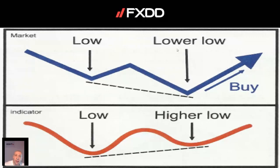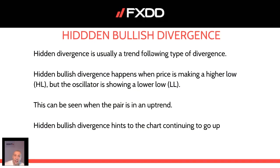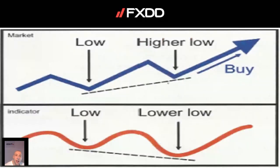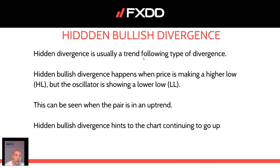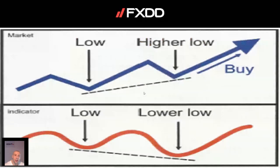Hidden bullish divergence is usually a trend-following type. It happens when price is making a higher low but the oscillator is showing a lower low, and this can usually be seen when a pair is in an uptrend. Hidden bullish divergence hints to the chart continuing to go up. Here, the price is going up — it made a higher low, but at the same time the indicator is making a lower low. This looks like some sort of megaphone if you compare it. This is hidden bullish divergence.